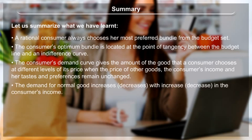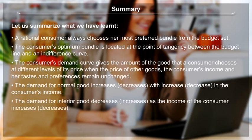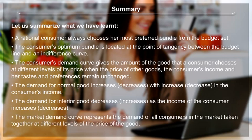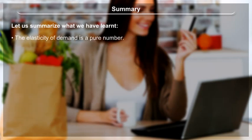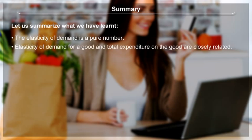A rational consumer always chooses her most preferred bundle from the budget set. The consumer's optimum bundle is located at the point of tangency between the budget line and an indifference curve. The consumer's demand curve gives the amount of the good chosen at different price levels when other factors remain unchanged. The demand for a normal good increases or decreases with an increase or decrease in income. The demand for an inferior good decreases or increases as income increases or decreases. The market demand curve represents the demand of all consumers at different price levels. The elasticity of demand is a pure number, and elasticity of demand and total expenditure on a good are closely related.